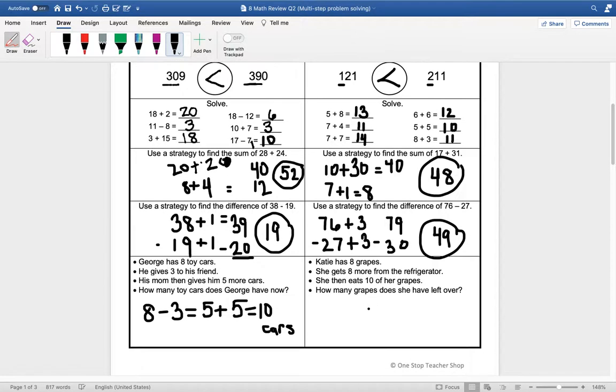All right, here's another multiple step word problem. So Katie has 8 grapes. So we're starting with the number 8. She gets 8 more from the refrigerator. All right, so we see the number more, so we're adding, so 8 plus 8, and that is 16. And then she eats 10 of her grapes. So we're going to take away 10. So 16 minus 10 is 6. How many grapes does she have left over? So she has 6 grapes.